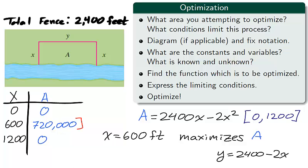But we wanted more than just x. We were interested in the dimensions of the rectangle. Recall that we found the relation between y and x, y equals 2400 minus 2x, using the limiting condition P. So when x is 600 feet, y is 1200 feet, and this dimension for the rectangle maximizes the area on the interval 0 to 1200.